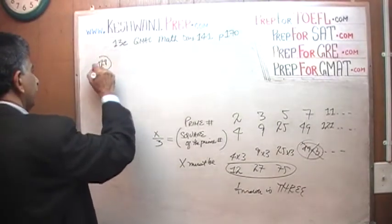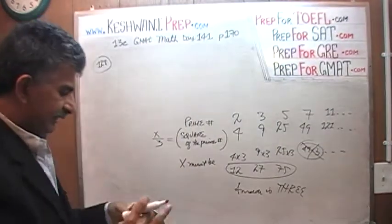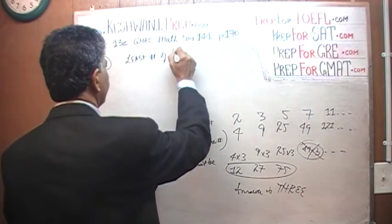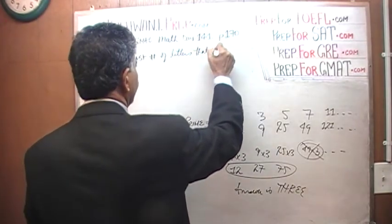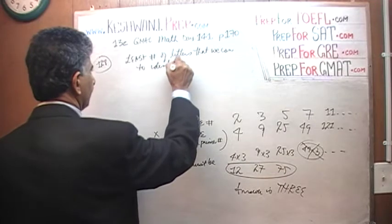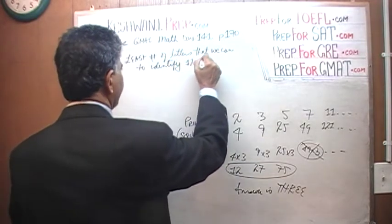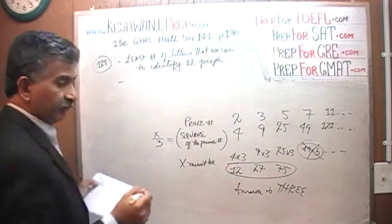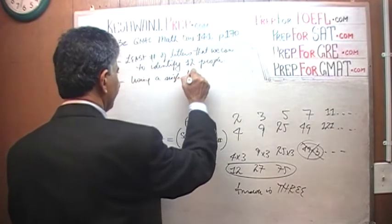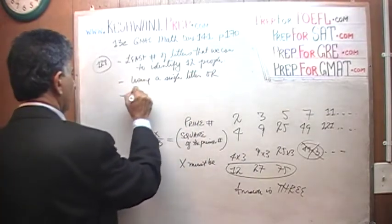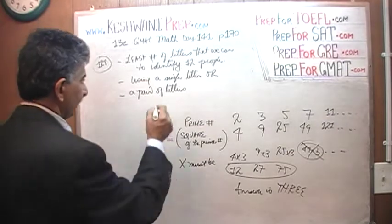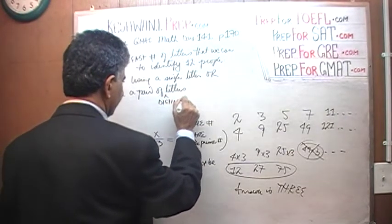In number 128, we are told that we have to use the least number of letters to identify 12 people. The restrictions are: we can use a single letter, or we can use a pair of distinct letters.